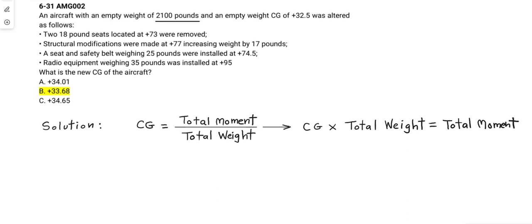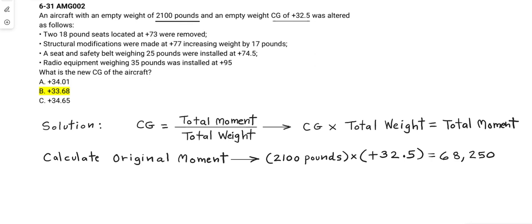We focus on the original weight 2100 pounds and the original CG positive 32.5. By multiplying these two values we can compute the original moment before the alteration or alterations occur. So the original moment is 68,250.